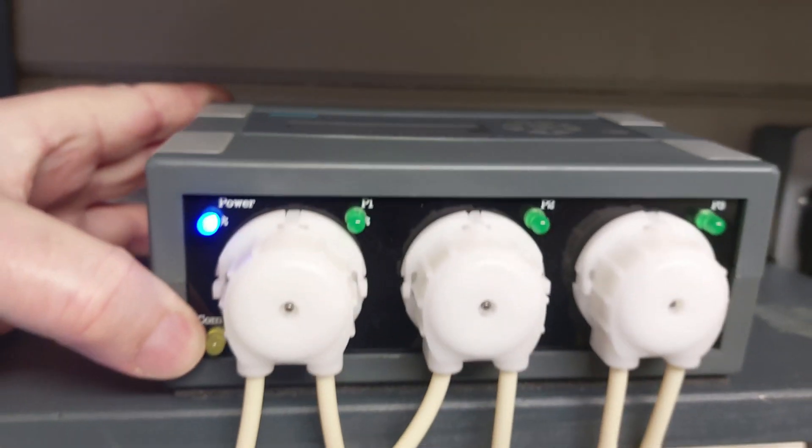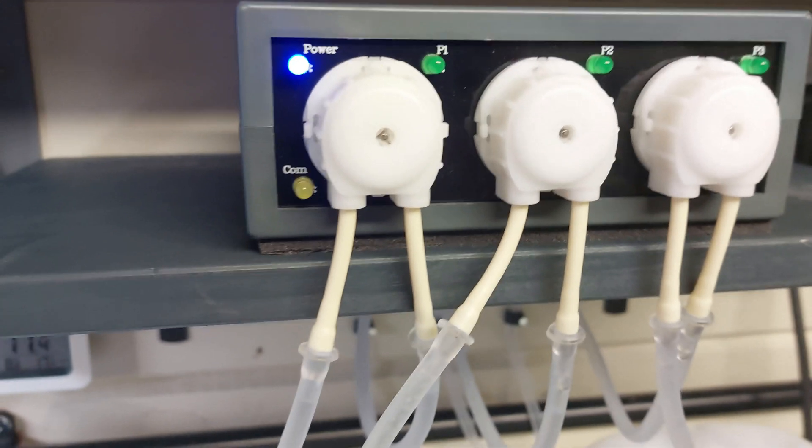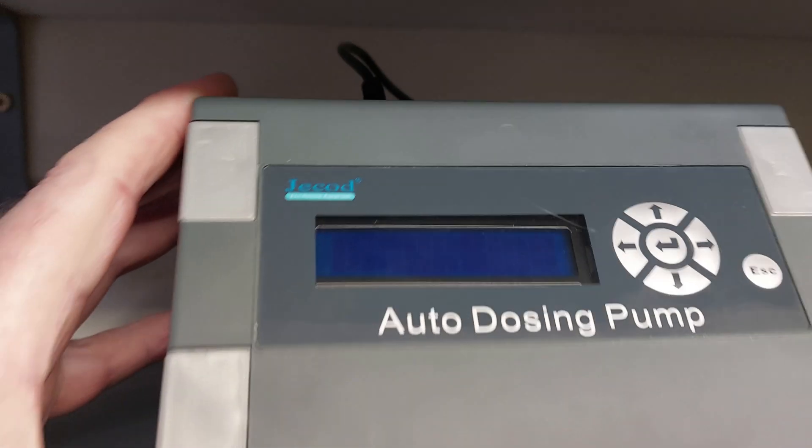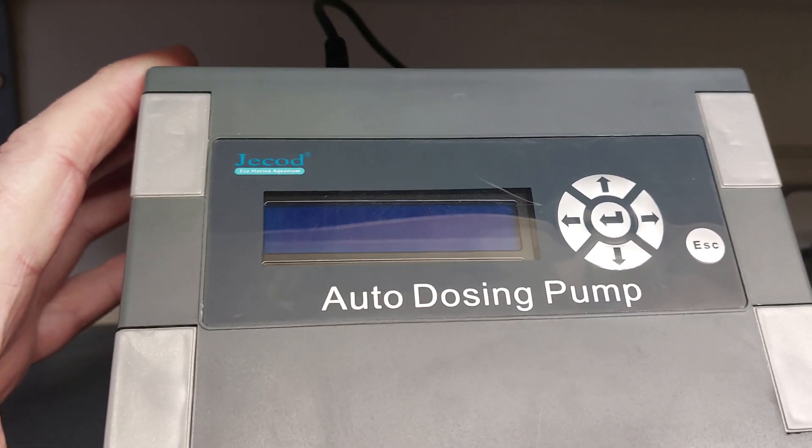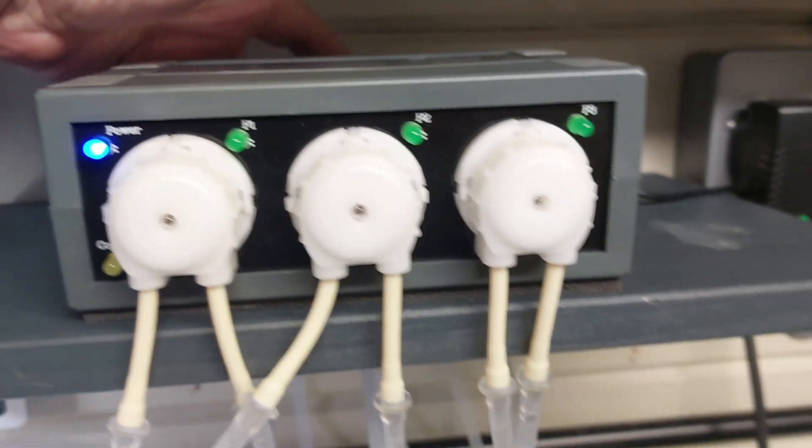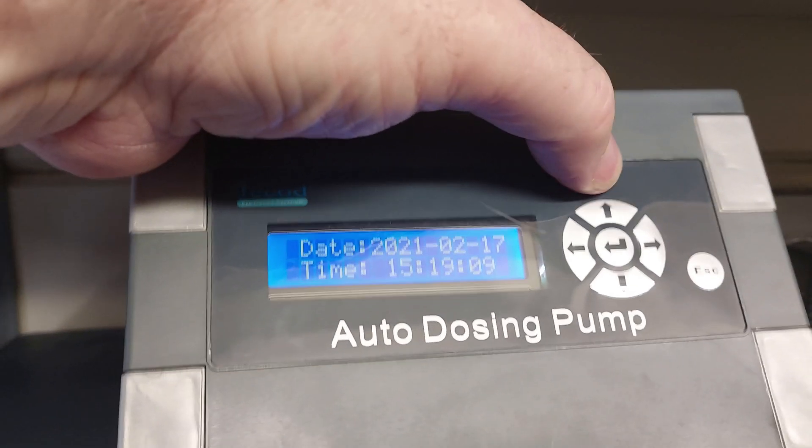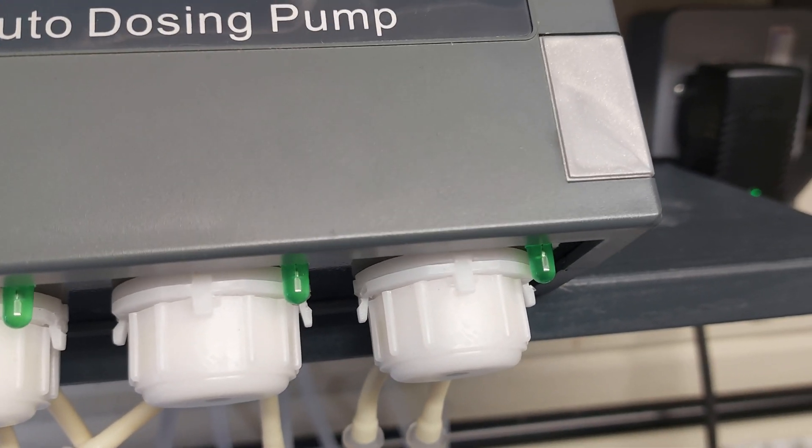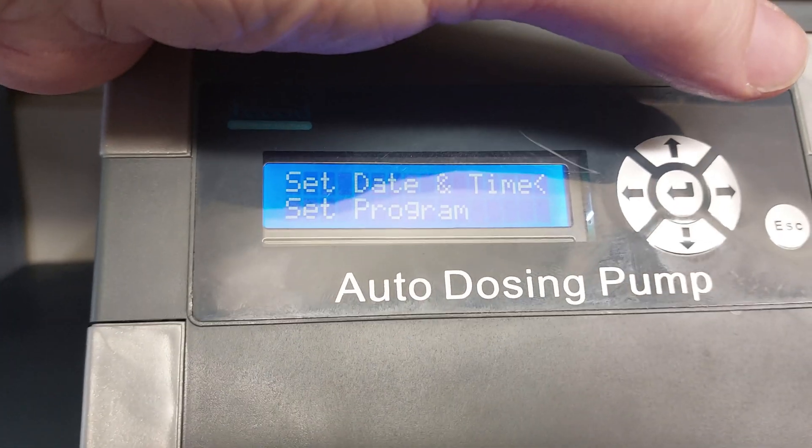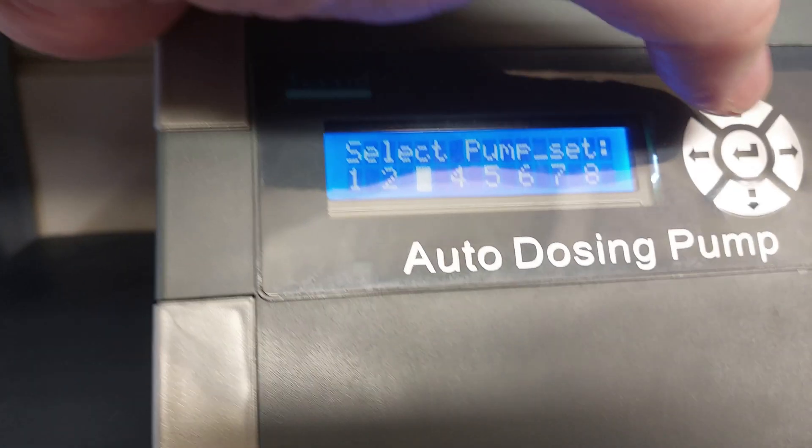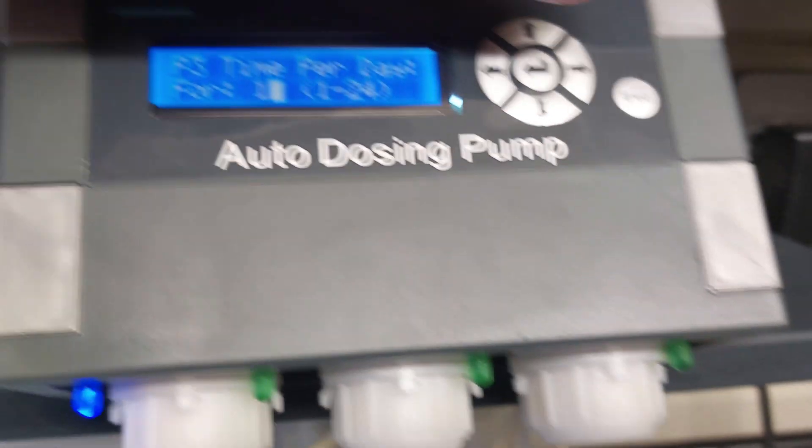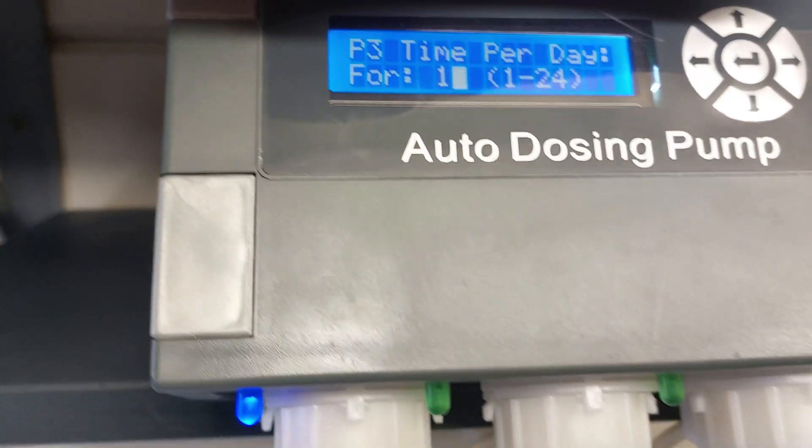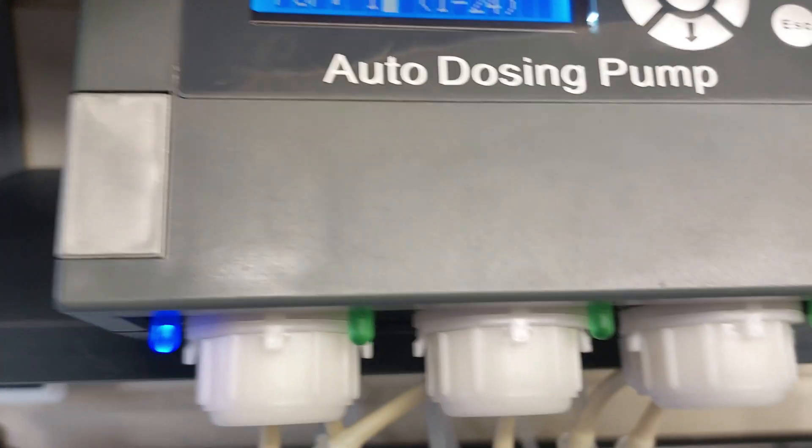So this is a Jebao DP3 three-channel dosing pump. I'll put a link in the description on how to set these up. It's pretty straightforward, but there's plenty of tutorials on YouTube that show you how to set the different channels up. Basically hit that middle button, it'll bring up the date and the time, and then you can go into set program mode and select which pump you want to set up. You can set that for how many times a day and things like that.